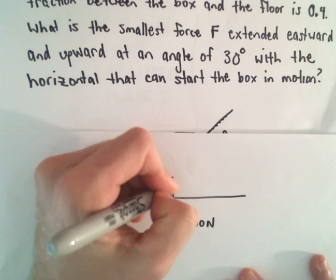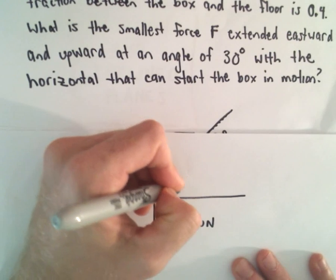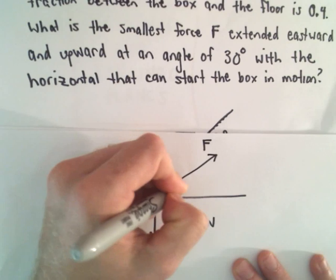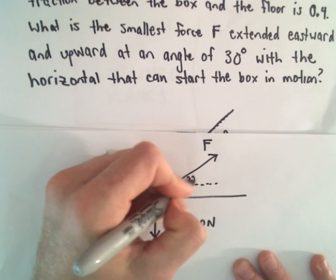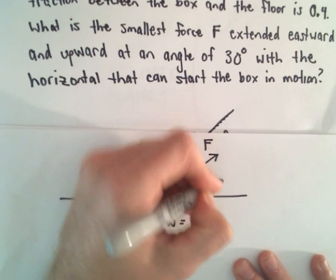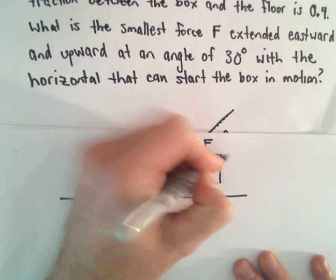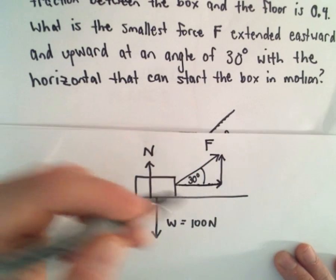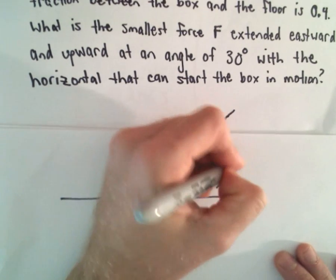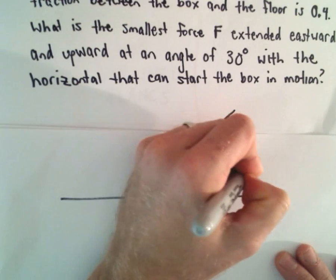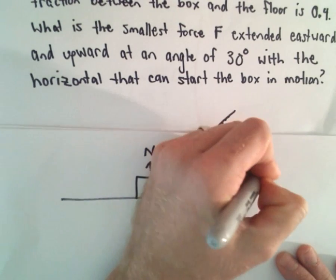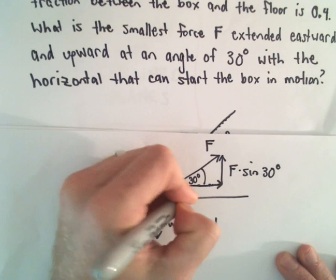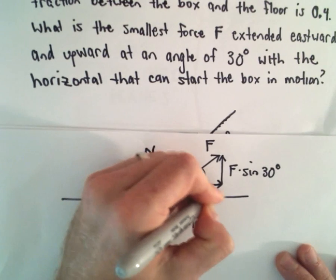Now, when we start moving it here, so when we start moving it, we've got this force F. And again, we know that that makes an angle of 30 degrees. That's information that's given to us. So again, just like in the other examples, I'm going to break this down into vertical and horizontal components. So our vertical component would simply be F times sine of our angle, which is 30 degrees. And the horizontal component would be F times cosine of 30 degrees.